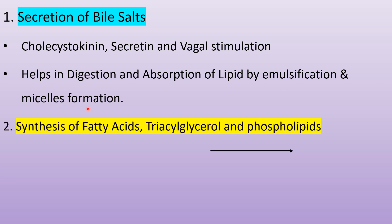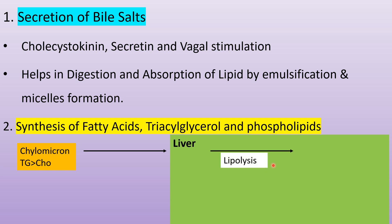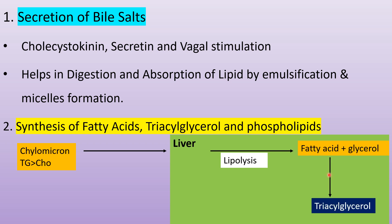The second function of the liver in fat metabolism is synthesis of fatty acid, triglycerol, and phospholipid. After the digestion and absorption of lipid, chylomicrons are formed in the intestinal cell, which have a high TG content and transport the triglycerol to the liver. In the liver, these triacylglycerols are broken down into fatty acid and glycerol. When in excess, they also form triacylglycerol, which is secreted out in the form of VLDL.